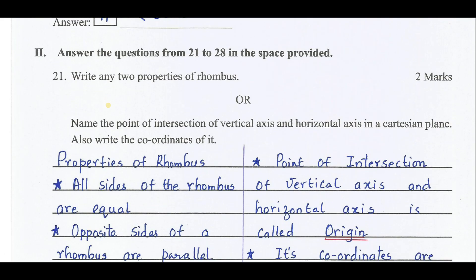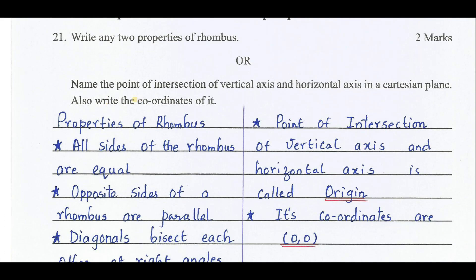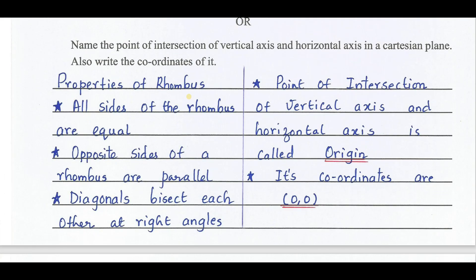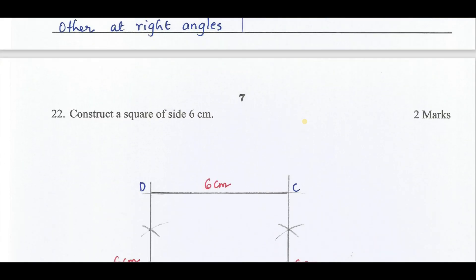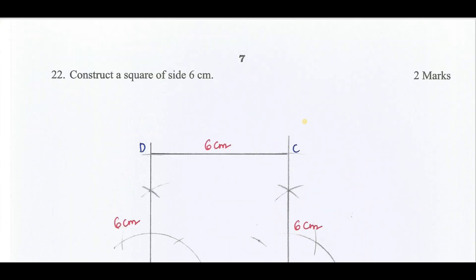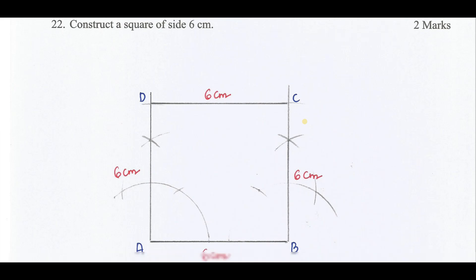Write any two properties of rhombus or name the point of intersection of vertical axis and horizontal axis in a Cartesian plane. The properties of rhombus are: opposite sides of a rhombus are parallel, diagonals bisect each other at right angles. Any two properties is enough. The point of intersection of vertical axis and horizontal axis is origin. The coordinates of origin are (0,0).